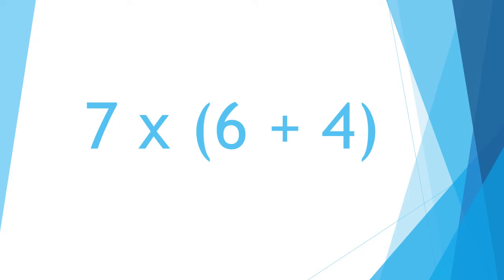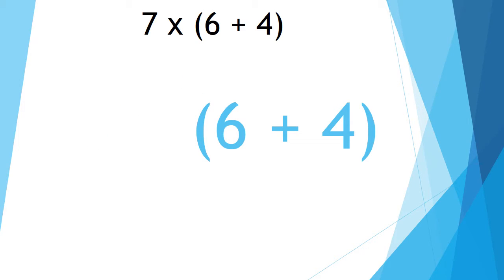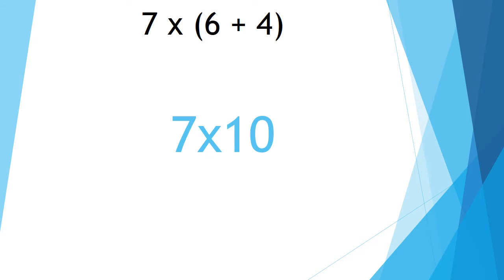Now let's go back to our problem: seven times, open parentheses, six plus four, close parentheses. The first thing we're going to look for are parentheses — that's this symbol right here. Since we do have parentheses, that's the first part we'll be working on. The problem in the parentheses is six plus four. What is six plus four? Think time. If you said ten, woo-hoo! You got it correct. So now we are left with seven times ten.